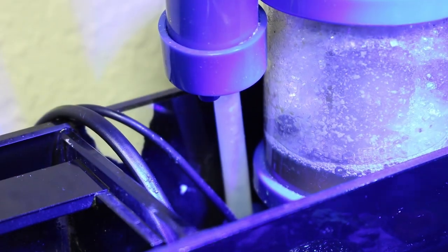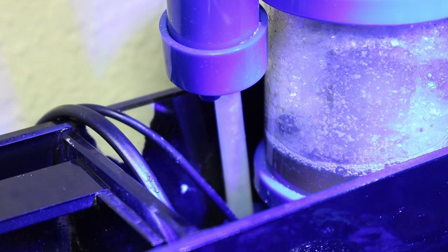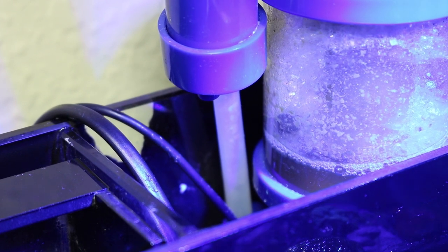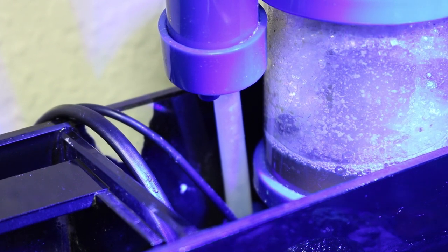I usually clean my skimmer cup every third day and the skimmer body once a month. And this is how I keep my Eshopps Nano skimmer.